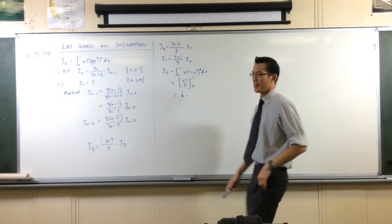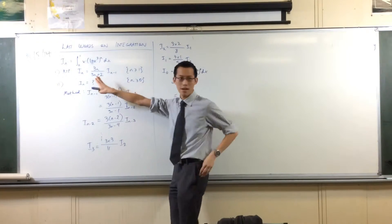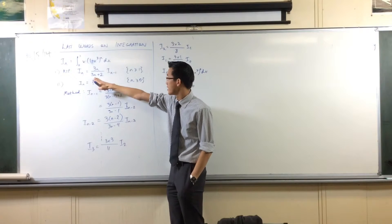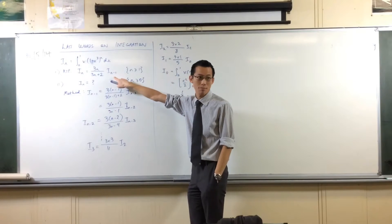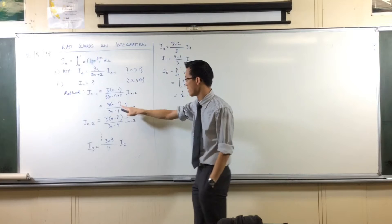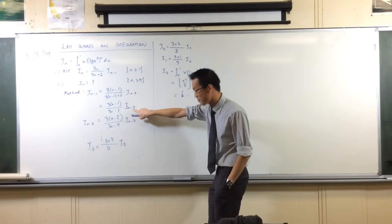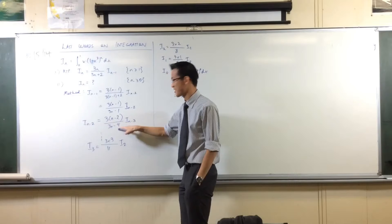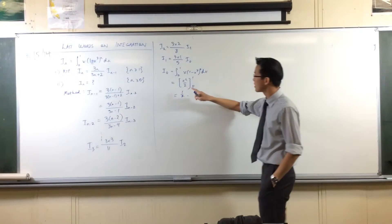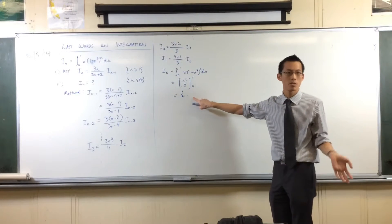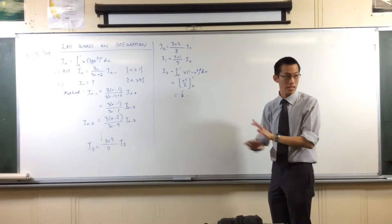So I_0 is, from 0 to 1, x times 1 minus x cubed to the power of 0. There you go. So that's 1. This is just x squared on 2, isn't it? If you evaluate it, that's a half. Okay, now, go all the way back to the top of the ladder.